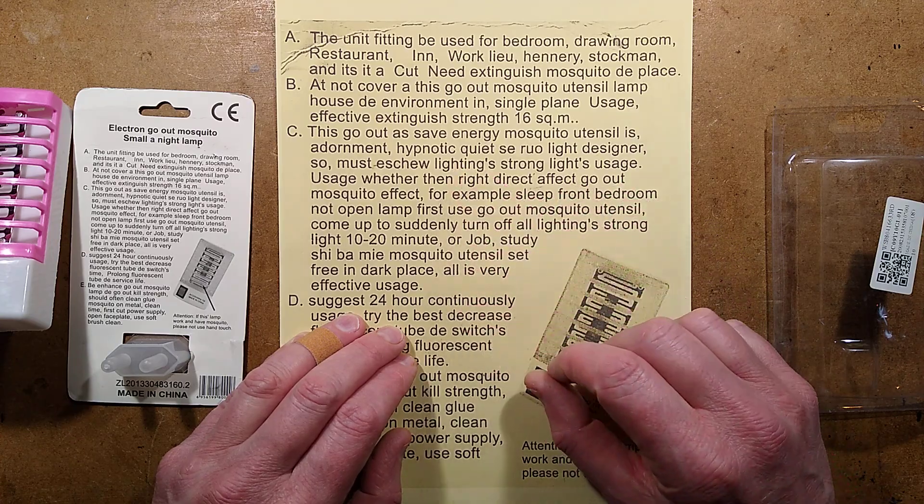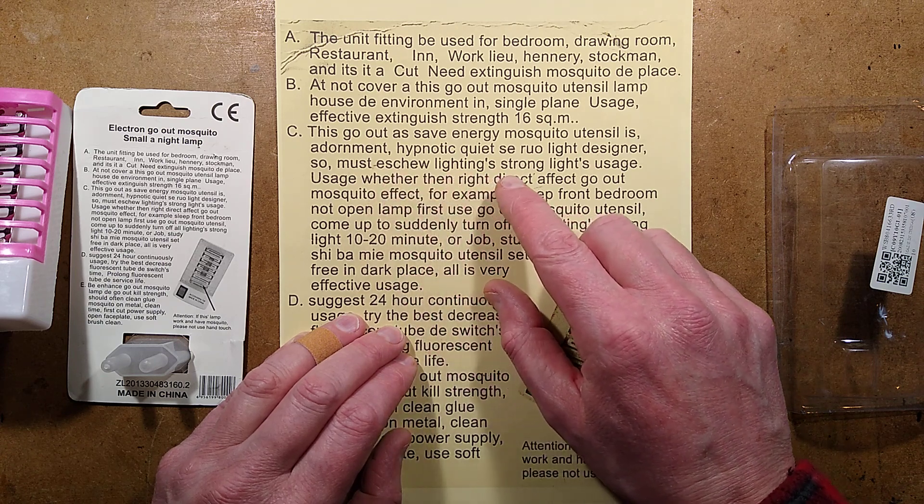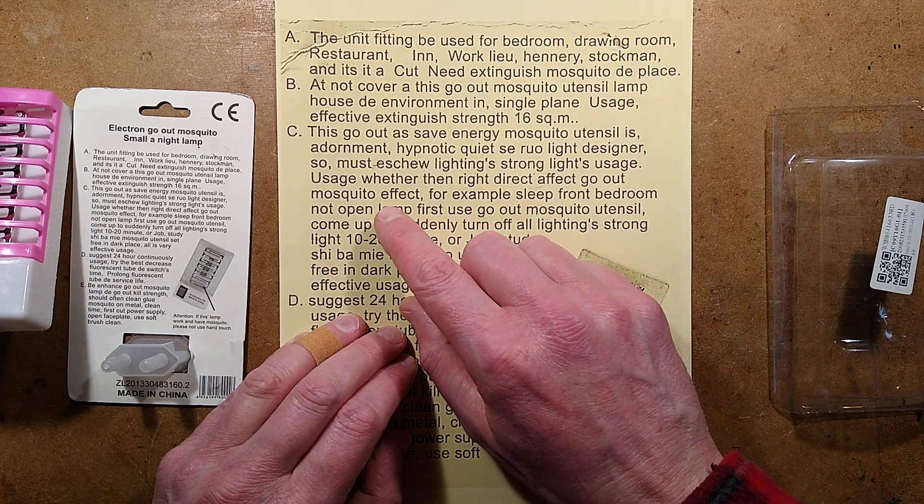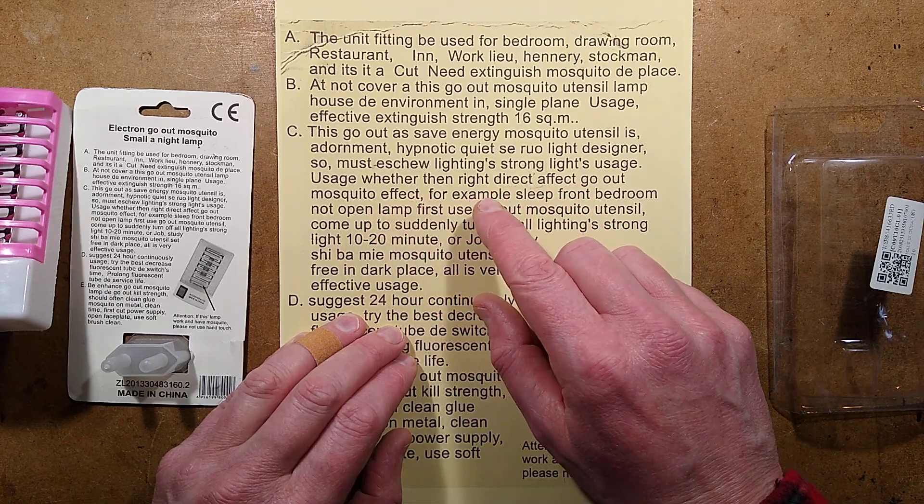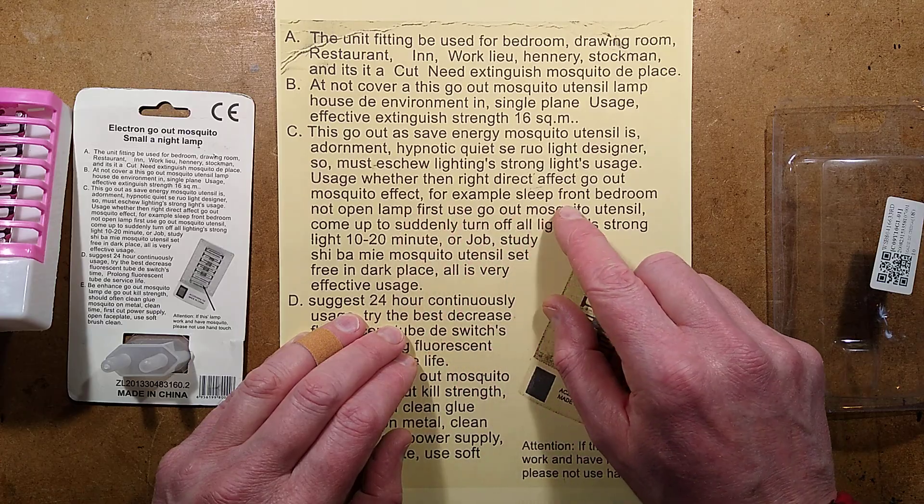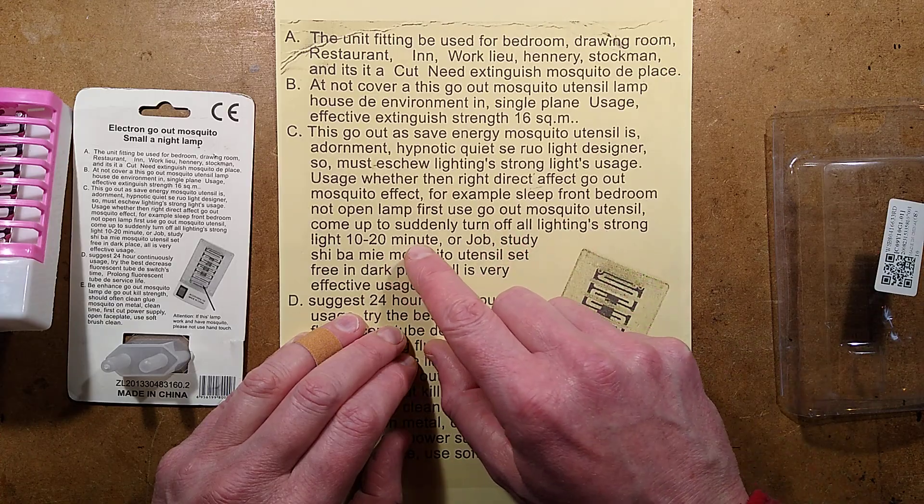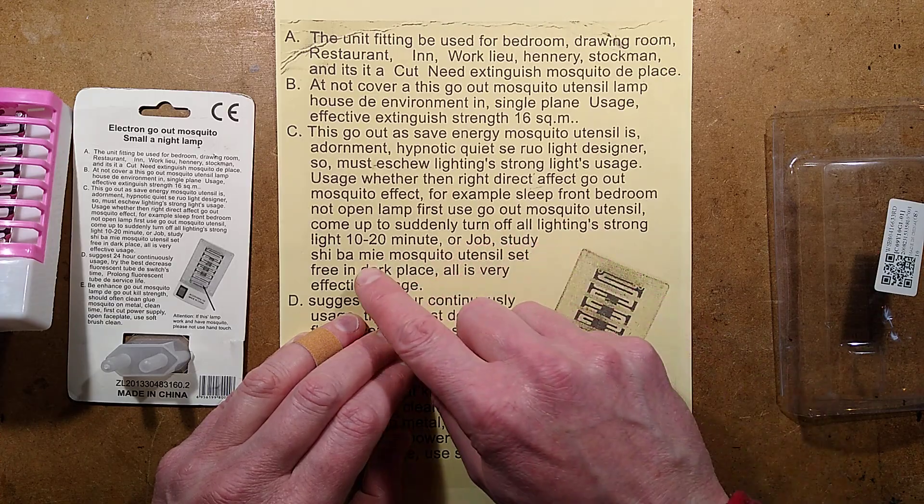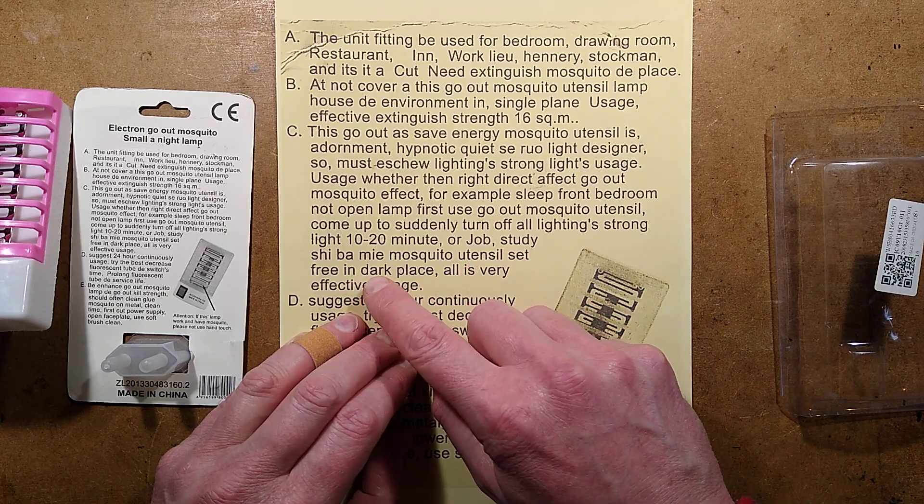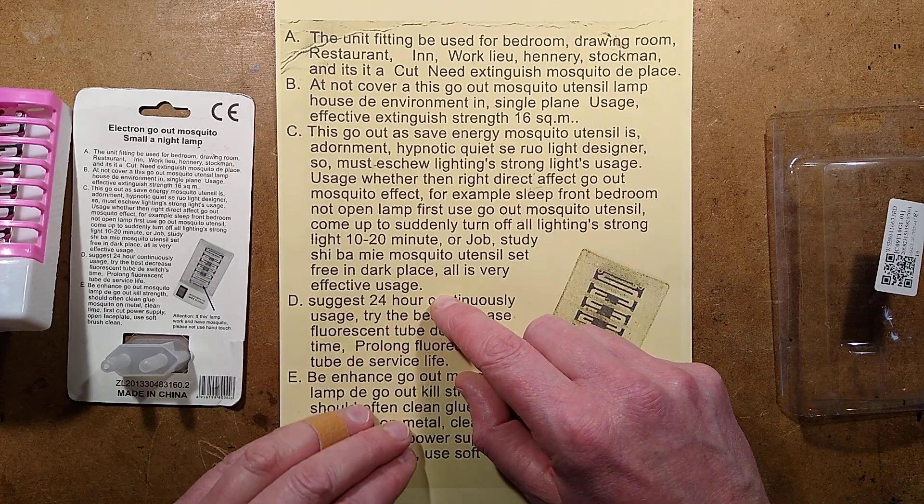This go-out a save energy mosquito utensil is adornment, hypnotic quiet, surreal light designer, so must eschew lighting strong lights usage, usage weather, then right direct effect go-out mosquito effect. For example, sleep front bedroom, not open lamp, first use go-out mosquito utensil, come up to suddenly turn off all lighting, strong light, 10 to 20 minute, or job, study, she-bam-me mosquito utensil set, free and dark place, all is very effective usage.